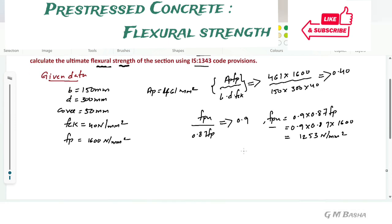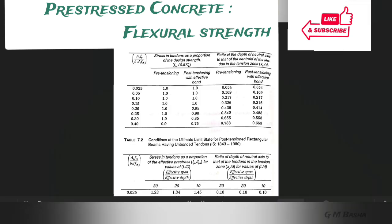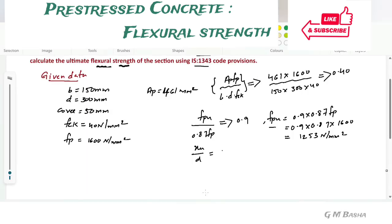Then your next one will be xu by d according to the table. So xu by d for 0.40 will be 0.783. Simplify this one. xu equal to 0.783 into depth of the beam 300. How much you will get? Around 234.9 mm. After obtaining this one, find out the ultimate flexural strength of the section.